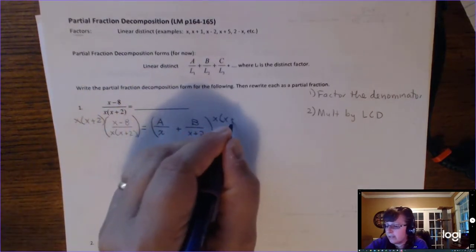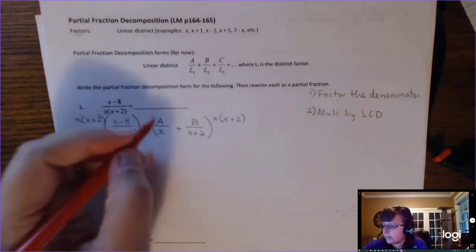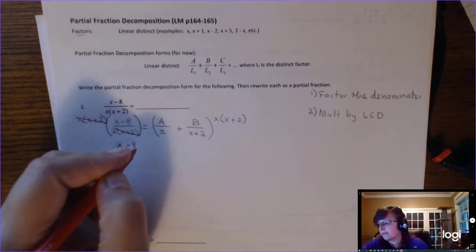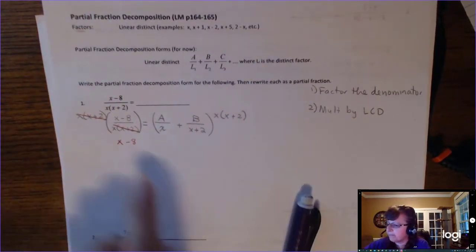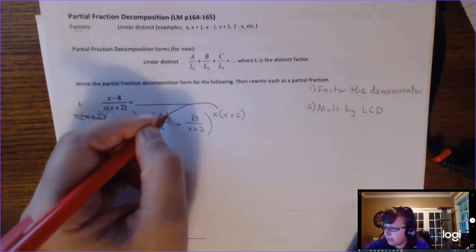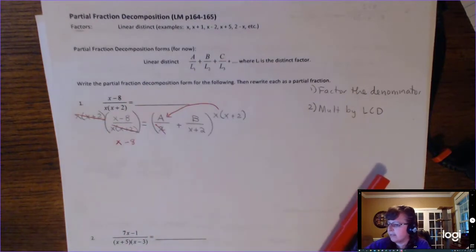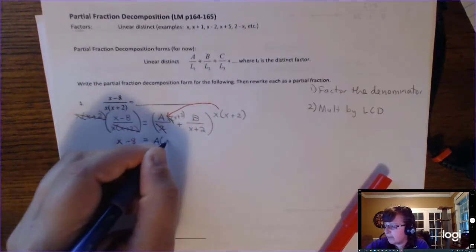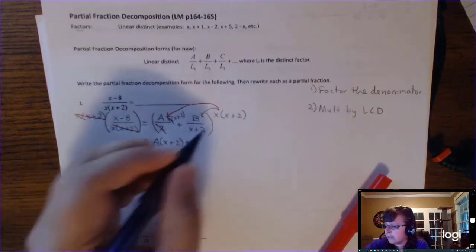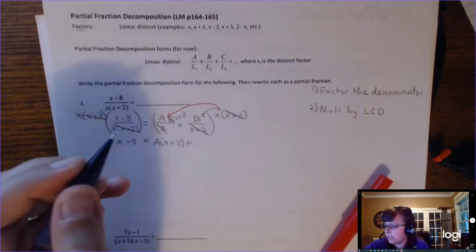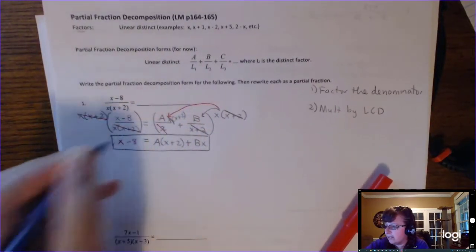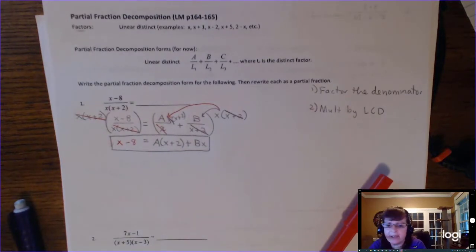The LCD is just going to be x times x plus 2. So we're going to multiply both sides by x times x plus 2. These cancel, leaving me with x minus 8. If I distribute x times x plus 2 to the A term, the x cancels, so you're left with A times x plus 2. If you distribute to the B term, the x plus 2s cancel, and you're left with Bx. Put a box around that equation because you're going to keep using it.